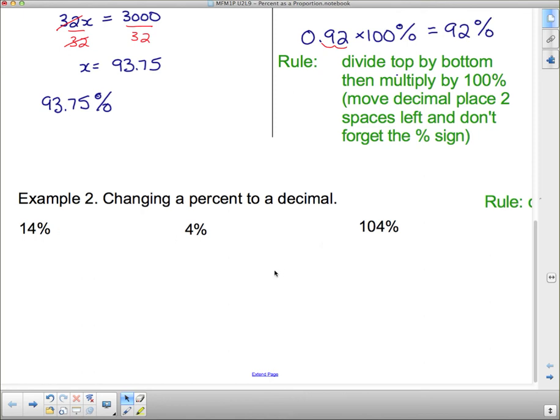Changing a percent to a decimal. This is really easy. The rule here is divide by 100. When you change a percent to a decimal, 14% is really 14 out of 100. We know how to change fractions to decimals, we just divide the top by the bottom. When you divide by 100, you're just moving the decimal place over. So this becomes 0.14. This one would change to 4 over 100. If I do 4 divided by 100, I get 0.04.